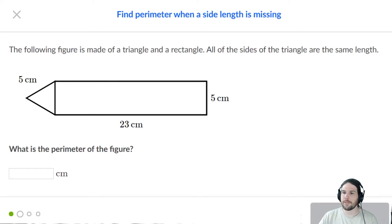The following figure is made out of a triangle and a rectangle. All of the sides of the triangle are the same length. So now we're just being reminded of what the word regular—in fact, it doesn't even use the word regular, it just says the sides of the triangle are the same length, which means that that side right here is five. And this part up here is 23.